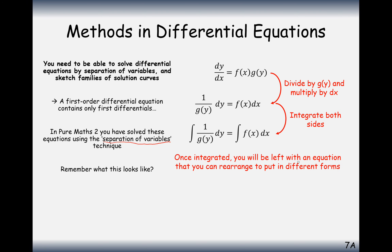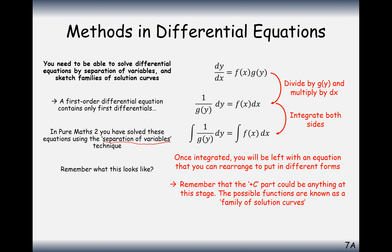Once you've integrated, you'll be left with an equation that can be rearranged into different forms, and you can rearrange it to whatever looks smartest for your final answer. Remember that the plus c could be anything at this stage — the possible functions are known as the family of solution curves. You only need to add c to one side; you don't need to add it to both sides, because you can just group them together and call it one c.